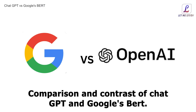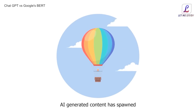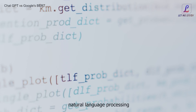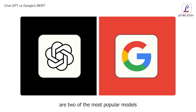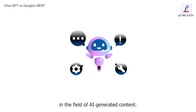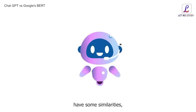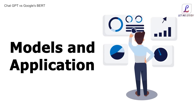Comparing ChatGPT and Google's BERT: the rise of AI-generated content has spawned many new developments in the field of natural language processing. ChatGPT and Google's BERT are two of the most popular models, which have generated significant buzz in AI-generated content. Although both systems have some similarities, they are different in terms of their data sources, models, and application.